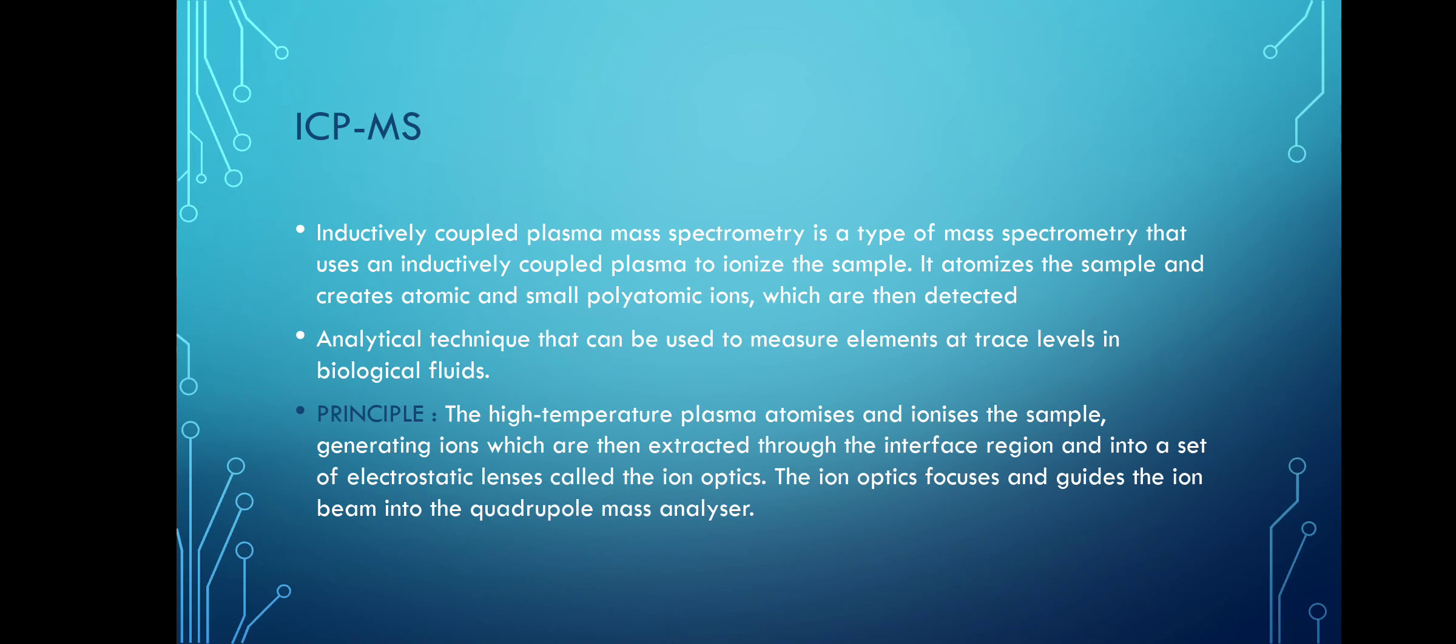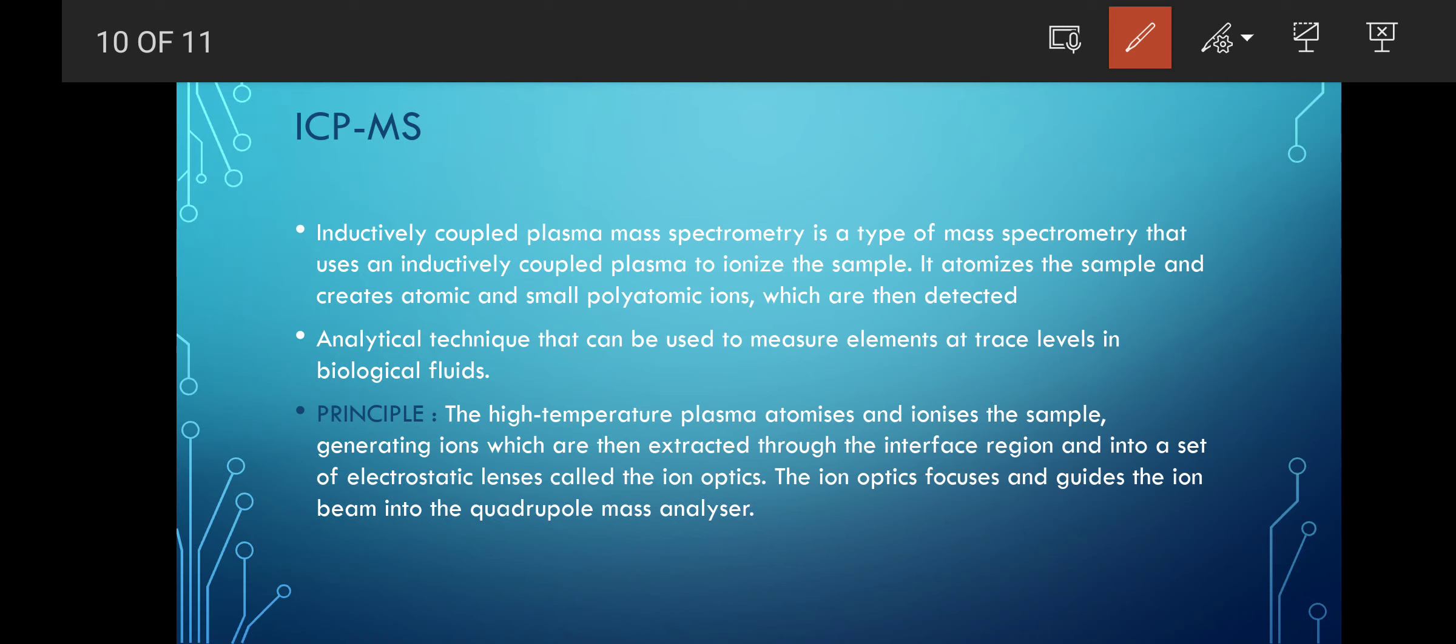Next is ICP-MS - inductively coupled plasma mass spectrometry. It is a type of mass spectrometry that uses inductively coupled plasma. The inductively coupled plasma ionizes the sample when inserted, and atomizes the sample creating atomic and small polyatomic ions which are then detected. It creates atomic and some polyatomic ions that are detected. It's an analytical technique used to measure elements at trace level in biological fluids.